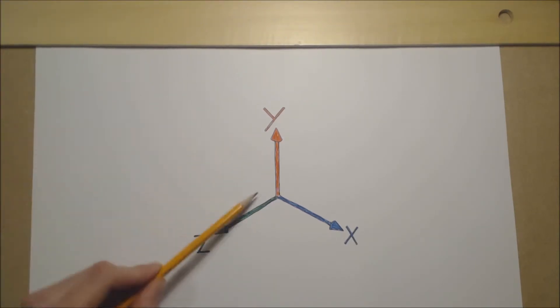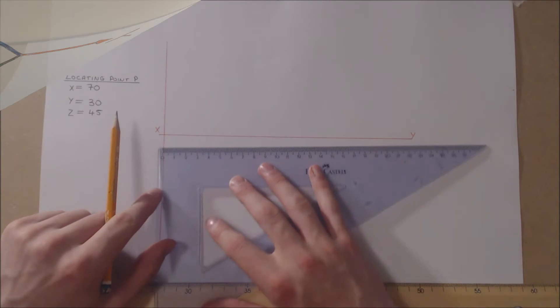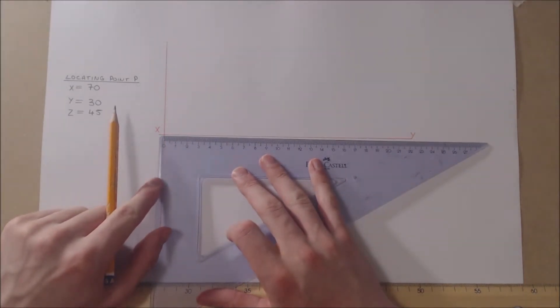Y represents the distance above the horizontal plane, X represents the distance right of a datum line, and Z represents the distance from the vertical plane. Using the X, Y, and Z coordinates, we will now plot the point.